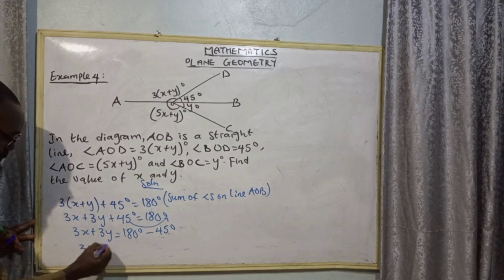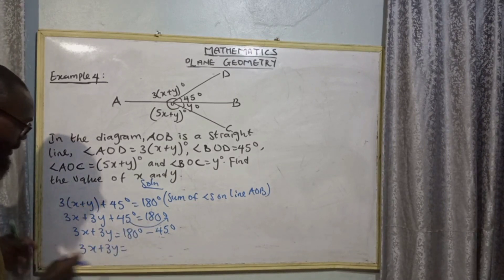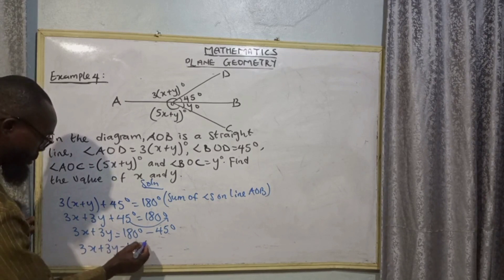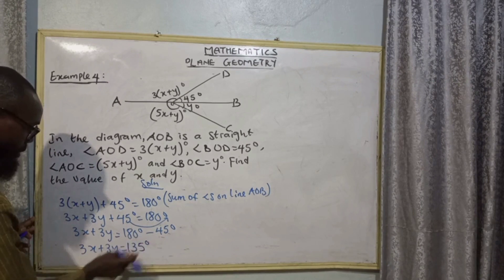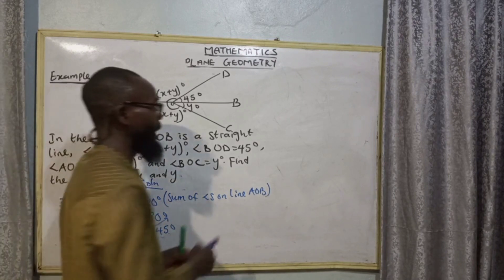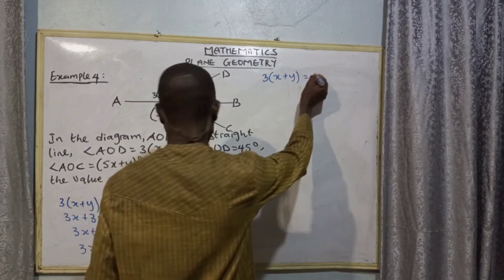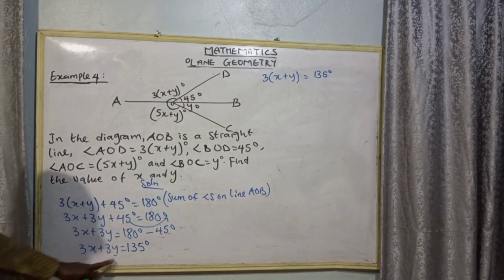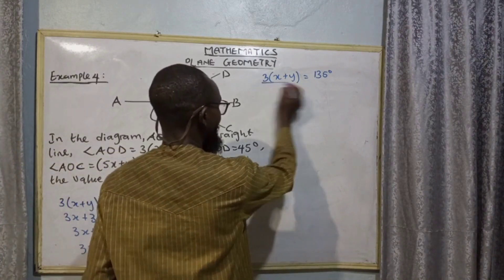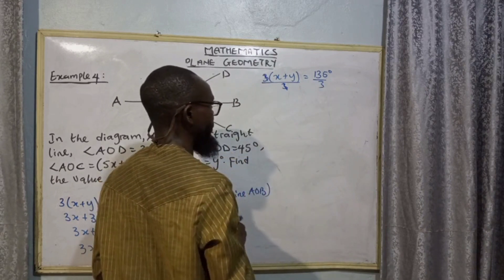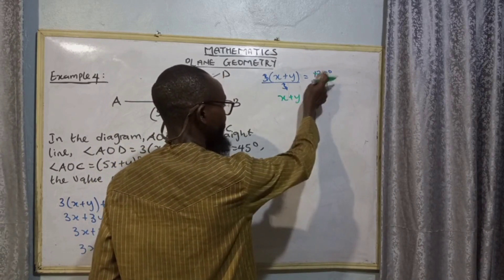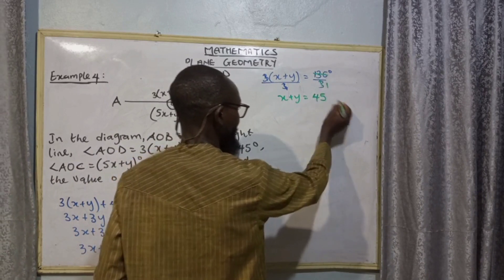So 3x + 3y = 180 minus 45 = 135 degrees. We have 3x and 3y — collecting like terms, factoring out 3: 3(x + y) = 135 degrees. Dividing both sides by 3: x + y = 45 degrees. Let's call this equation 1.